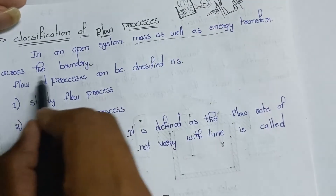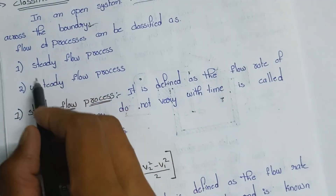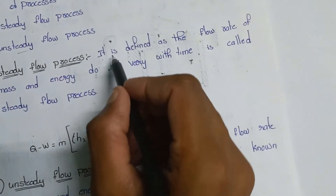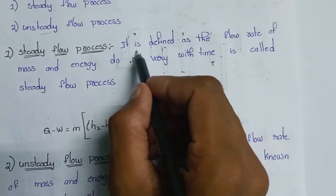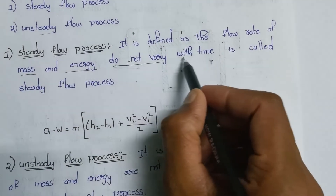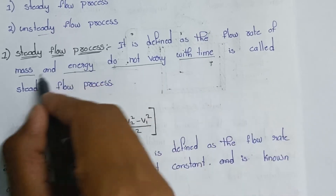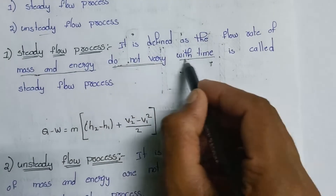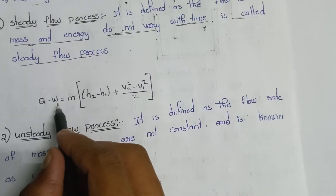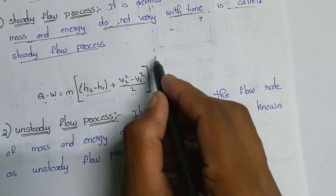The other classifications are the steady flow process and the unsteady flow process. The steady flow process is defined as the flow rate of mass and the flow rate of energy do not vary with time. The formula is: Q minus W equals m into (h2 minus h1) plus (V2 squared minus V1 squared) divided by 2. This is the steady flow energy equation formula. This formula will be explained in the next video — it is very important.